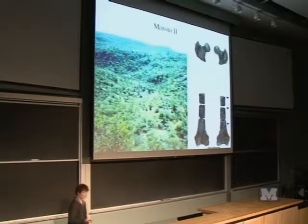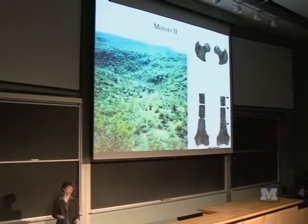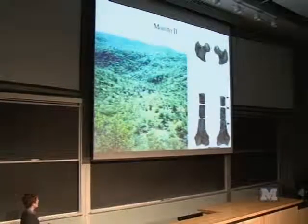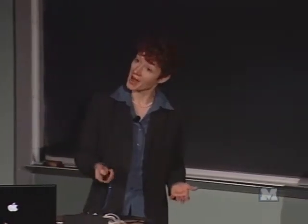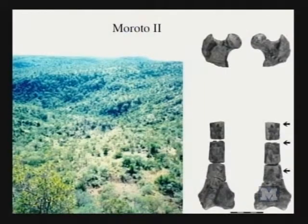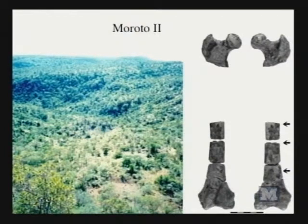That was kind of the climate when I first went to Moroto — the idea was to try and find more fossils to better understand the adaptations of this hominoid. In that first field season, we actually found more ape fossils. We found the right and left femur, or thigh bone, of a hominoid. This is the right femur shown from the front and the back. And this is what the fossil site looked like — I snapped this picture in 1994 when I first went to Moroto.